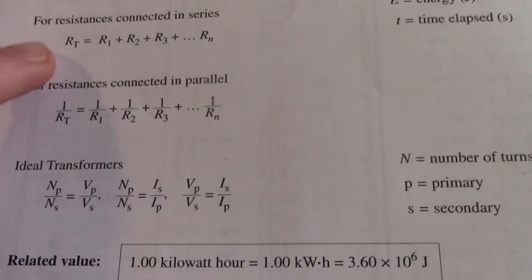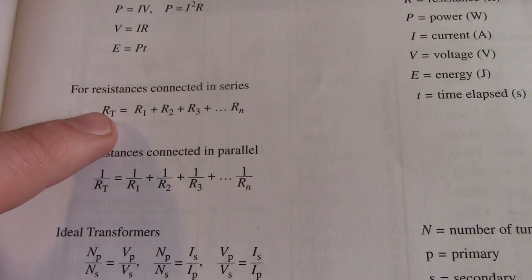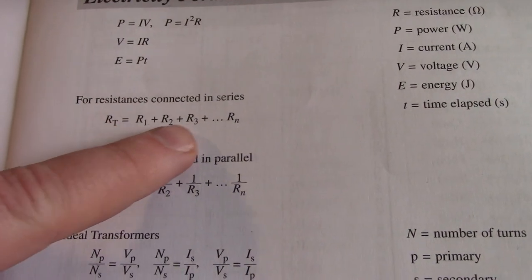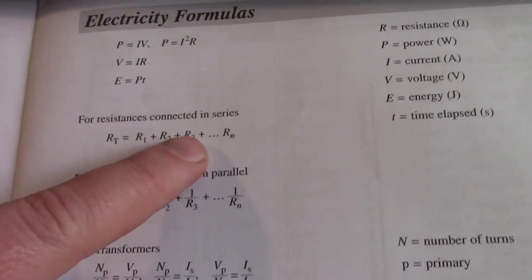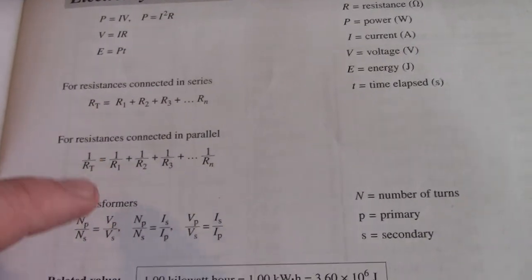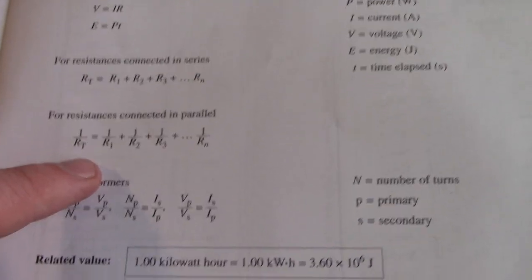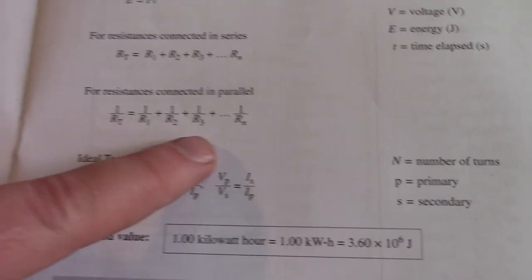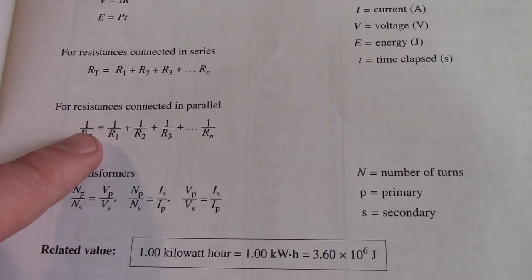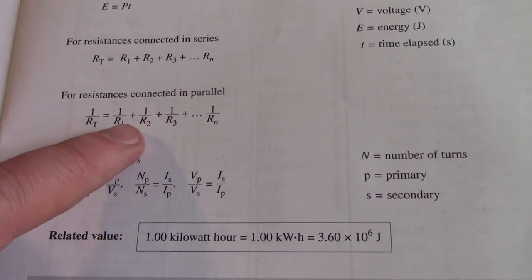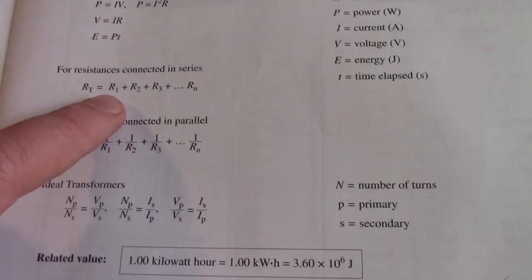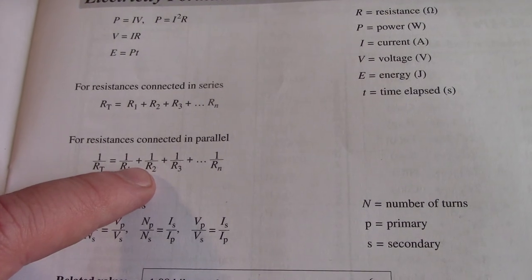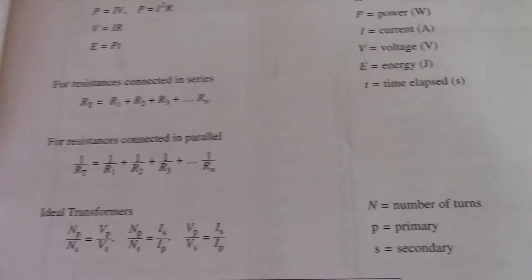For calculating total resistance in a series circuit: total resistance is the sum of all resistors, so resistance increases as we add resistors in series because there's only one pathway for flow. In a parallel circuit, total resistance is the reciprocal of the sum of all the resistances — so resistance actually decreases as we add resistors in a parallel circuit.